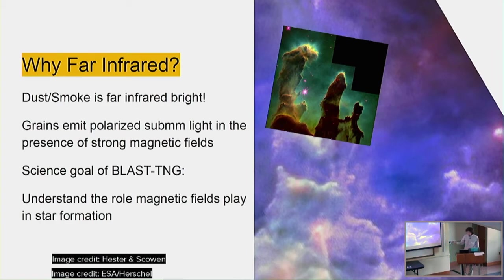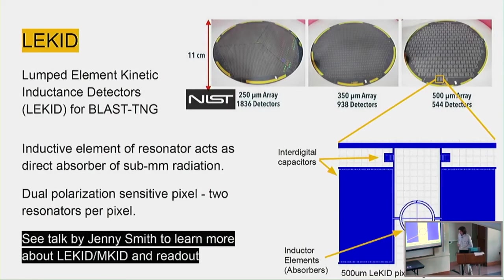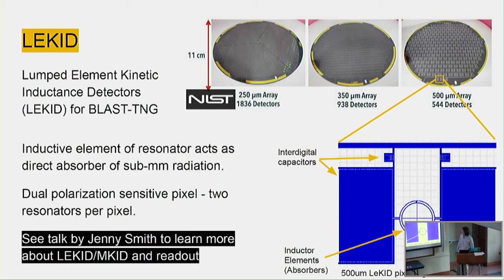BLAST's science goal is to actually understand the role that magnetic fields play. In order to actually measure far-infrared radiation, we're using superconducting resonators which use a property called kinetic inductance, which all metals have, but at low temperatures it becomes a very serious component to the total inductance. We have three different bands in BLAST: 250, 350, and 500 microns.